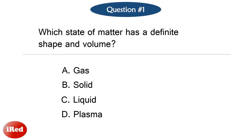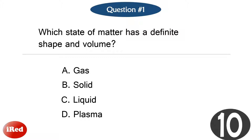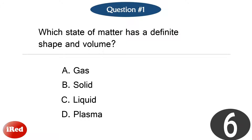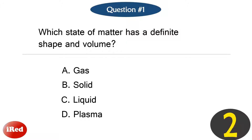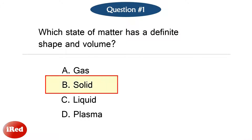Question number one. Which state of matter has a definite shape and volume? The correct answer is letter B, solid.